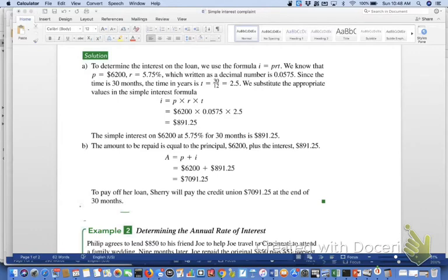To calculate simple interest, use the formula I equals PRT. In example one, the principle is just a regular number. You know to turn the rate into a decimal, but I want to focus on calculating T, the amount of time.